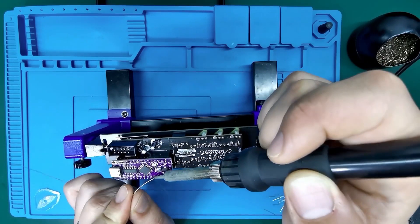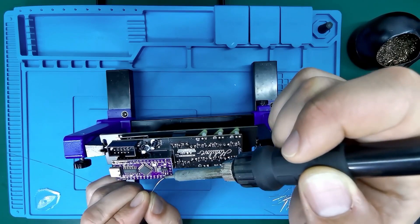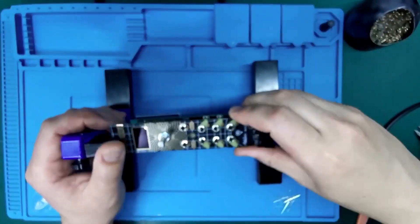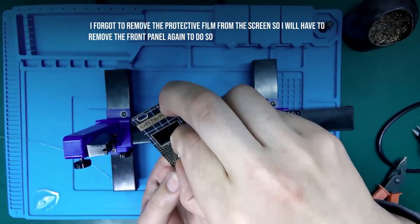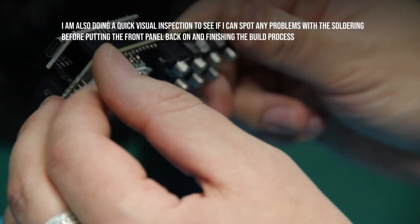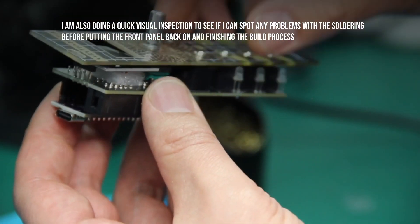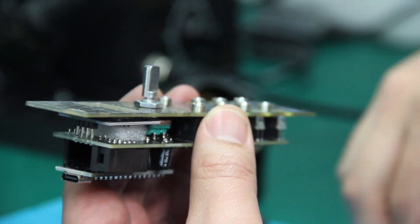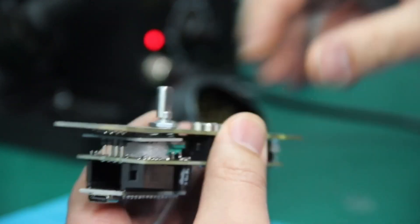To remove the protective film from the screen, I will now have to remove the front panel again to be able to do so. I am also doing a quick visual spot check to see if there are any problems that are visible with the soldering, before attaching the front panel and finishing the build.